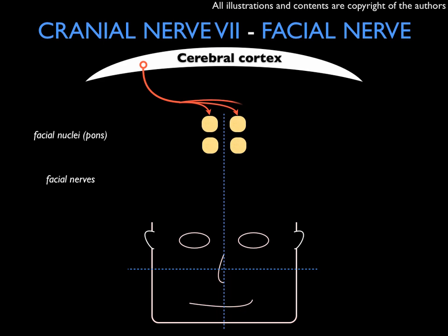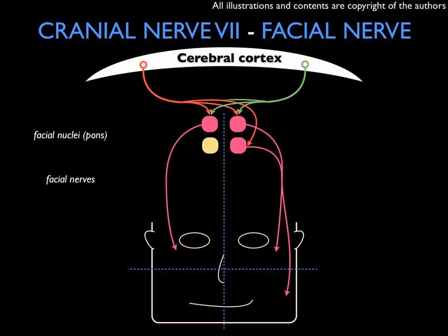So, we have the upper motoneuron coming from the cerebral cortex, going down with bilateral innervation of the two upper nuclei, and contralateral innervation only of the lower nuclei. So one side of the cerebral cortex innervates bilaterally the upper part of the face, and contralaterally only the inferior half — so three quarters of the face. Of course, we have symmetry of this innervation, so on the other side the upper motoneuron innervates the three nuclei as before, and we can complete the picture seeing the fourth quadrant being innervated.